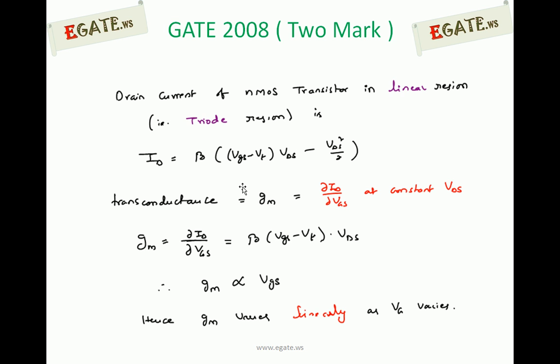We know that the drain current of an NMOS transistor in linear region, i.e., triode region, is ID = β(Vgs - Vt)Vds - Vds²/2. The condition for triode region is that Vgs - Vt should be larger than Vds.